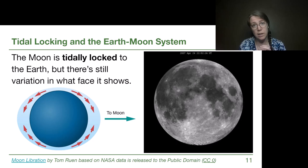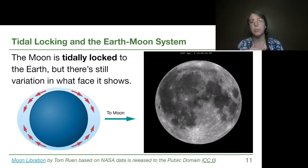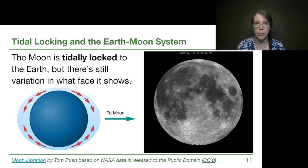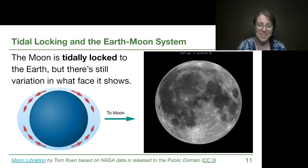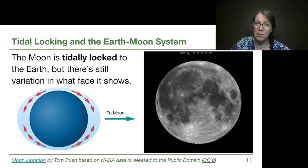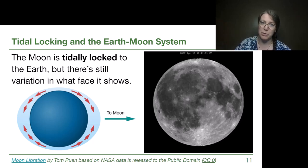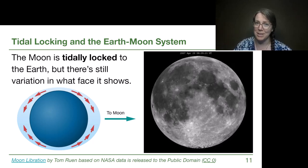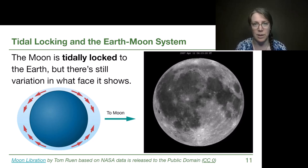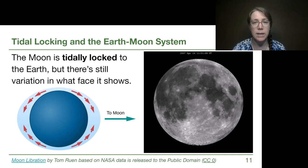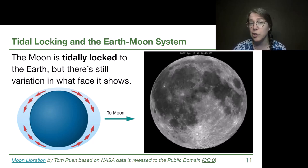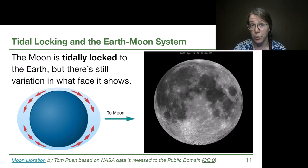If we were to wait billions of years, Earth would also become tidally locked to the moon — so there'd be a side of Earth where you'd always see the moon in the sky, and a side that would never see it. That would take about 15 billion years, and there's lots of other astronomy that will happen by then. The moon also moves about an inch and a half farther away from us every year.